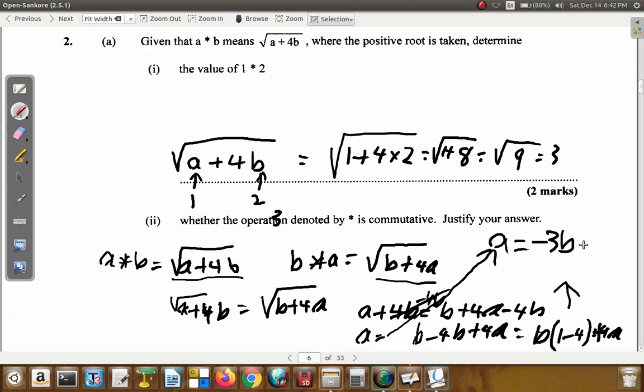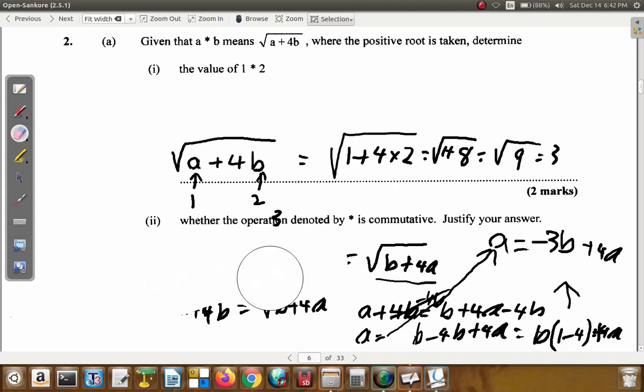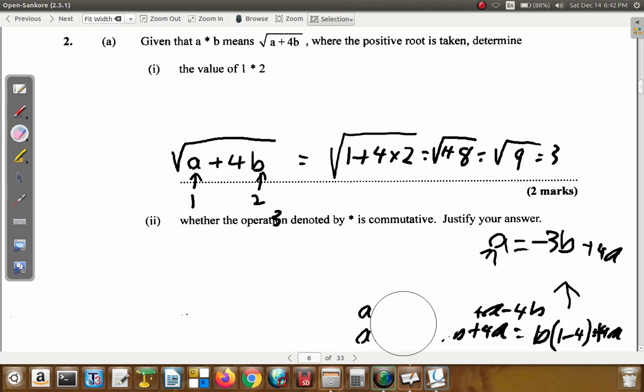So B times 1 minus 4 is negative 3B. It should have been plus 4A. It doesn't seem so. So, let's try it. Just one wrong example will give it away.